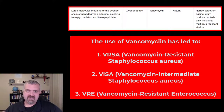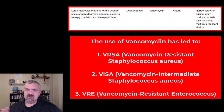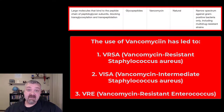Combinations of antibiotics are definitely becoming more common because they may be more effective, and they also may slow evolution — at least you're making the bacteria evolve around multiple different mechanisms. The last, and to me the scariest, vancomycin-resistant organism at this point is called VRE.